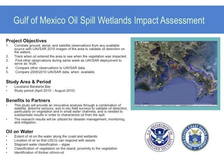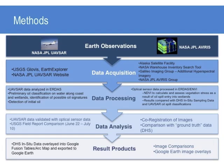Remote sensing radar, which can see below cloud cover, will be instrumental in reaching this goal. This study provides an analysis through a combination of satellite, airborne sensors, and in-situ field surveys to validate oil detection. The research results will be utilized for disaster management, monitoring, and mitigation. This research uses UAV SAR data, AVIRIS data, hyperspectral data from the Galileo Group, in-situ field surveys by the Department of Homeland Security's Science Mission Directorate, and USGS observation sites to validate UAV SAR L-band data in the assessment of the oil spill's impact on coastal areas.